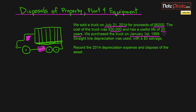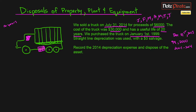We've recorded depreciation expense up until December 31st, 2013, so we only need to record the 2014 depreciation expense. Let's figure out how many years have elapsed. From 1999 to 2000 is one year, then 2001 to 2014 is 14 more years, so 14 plus 2 equals 16 years in total. Then the months from January to July — January, February, March, April, May, June, and July — gives us 16 years and seven months.